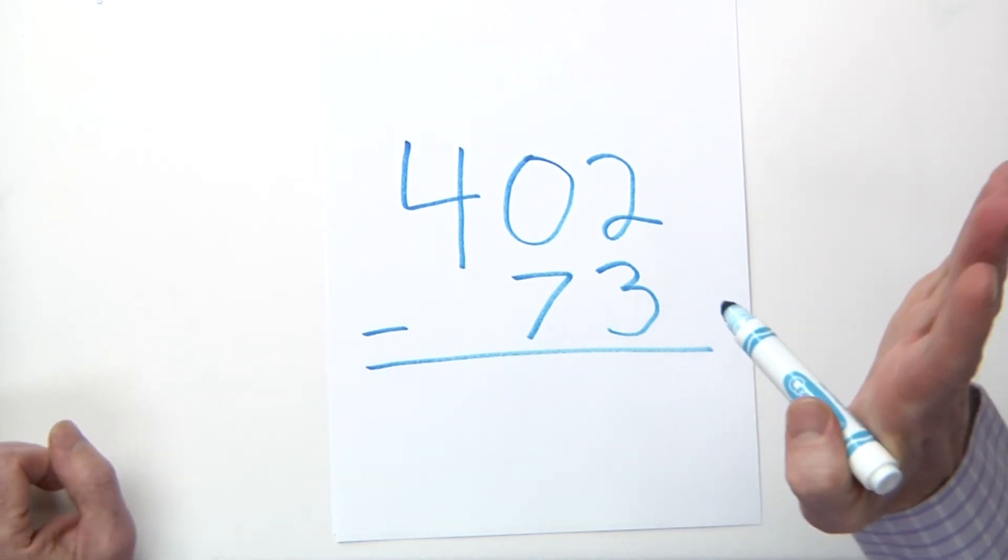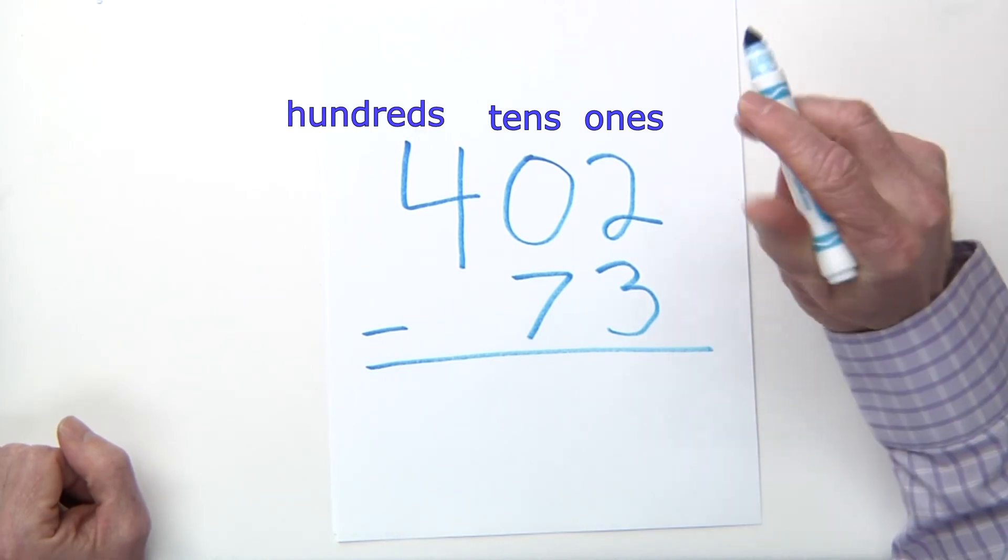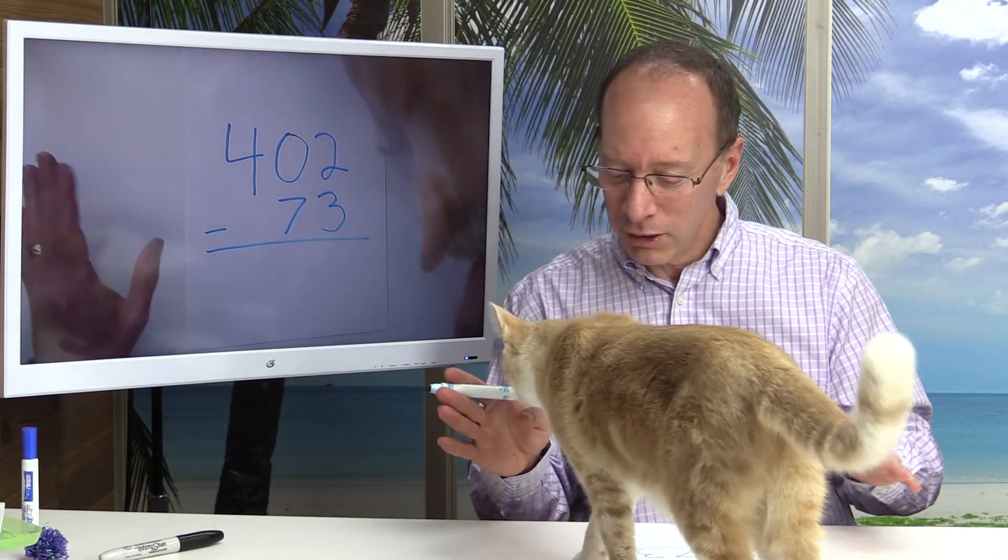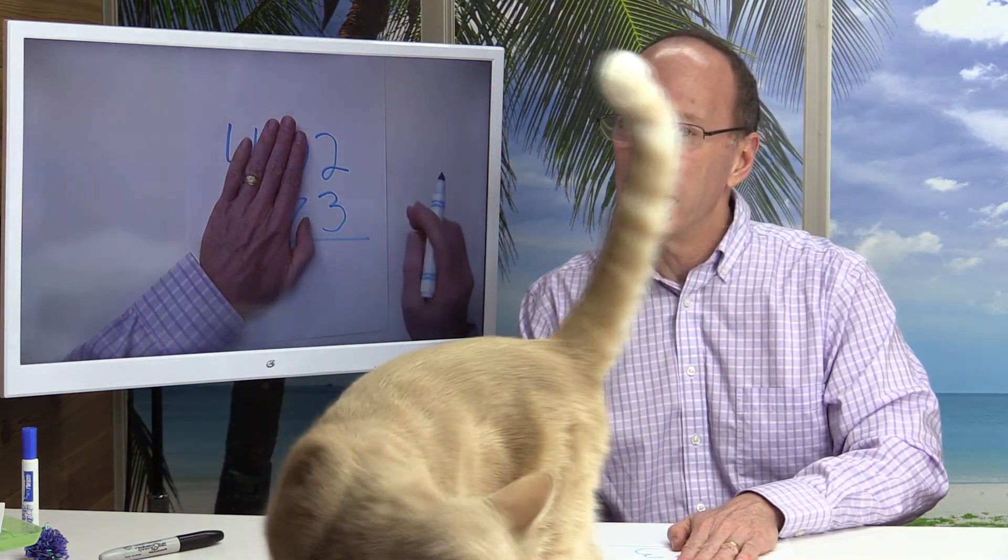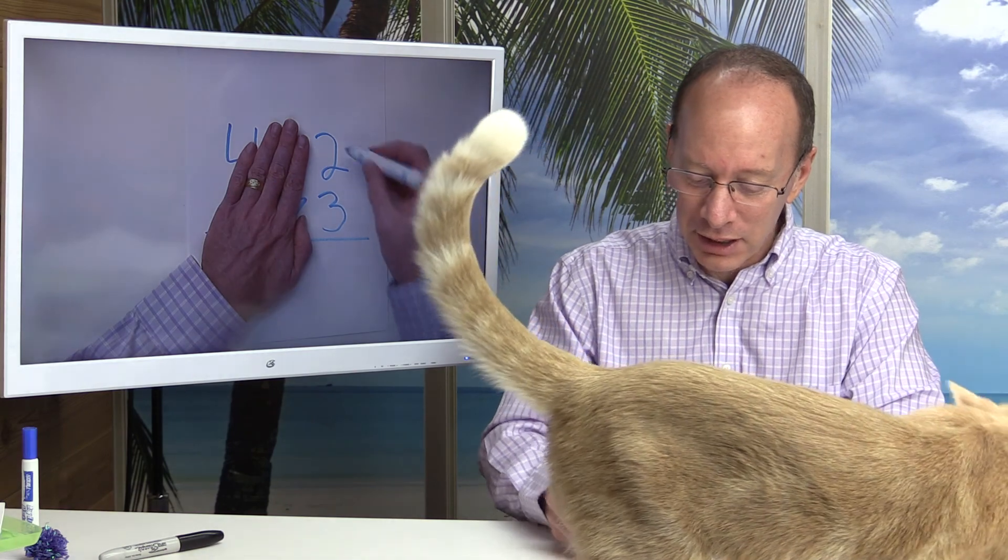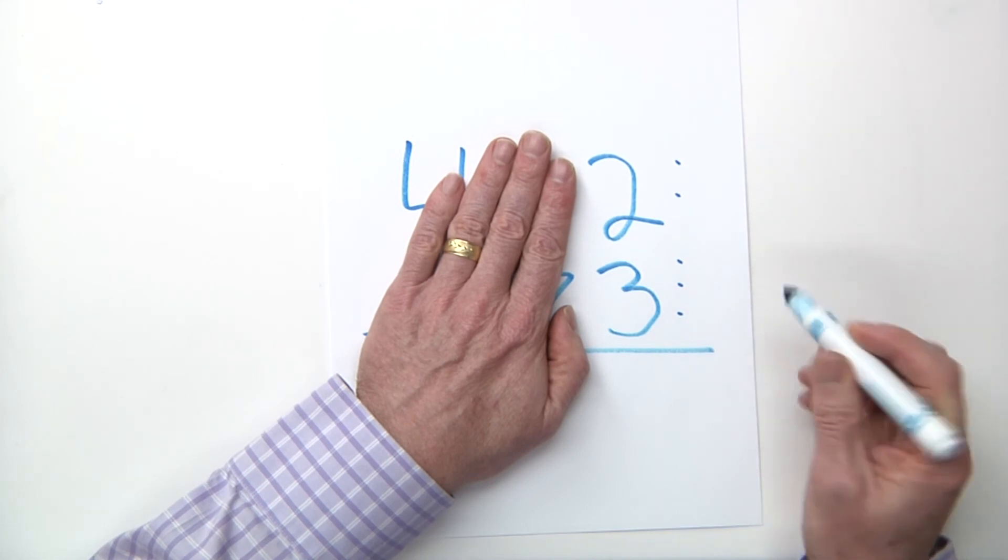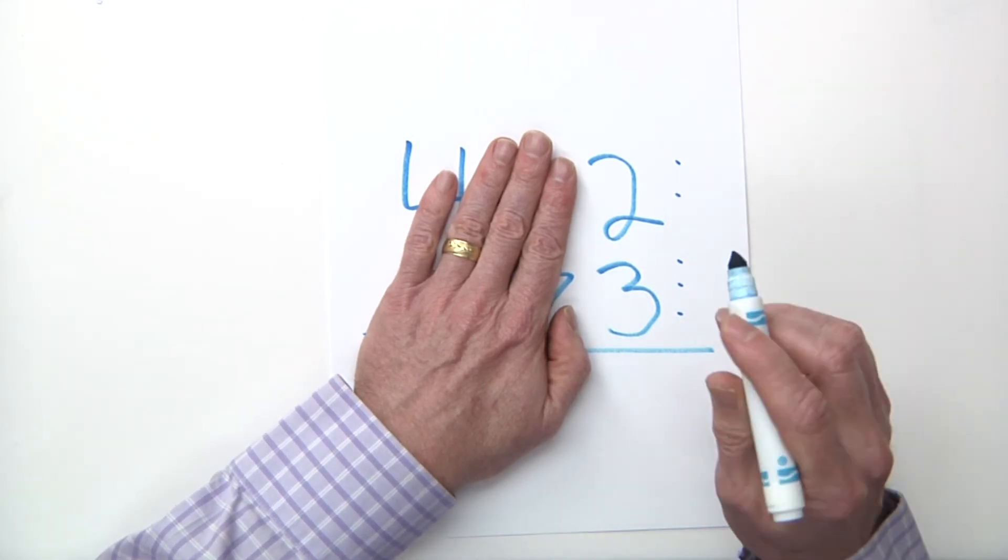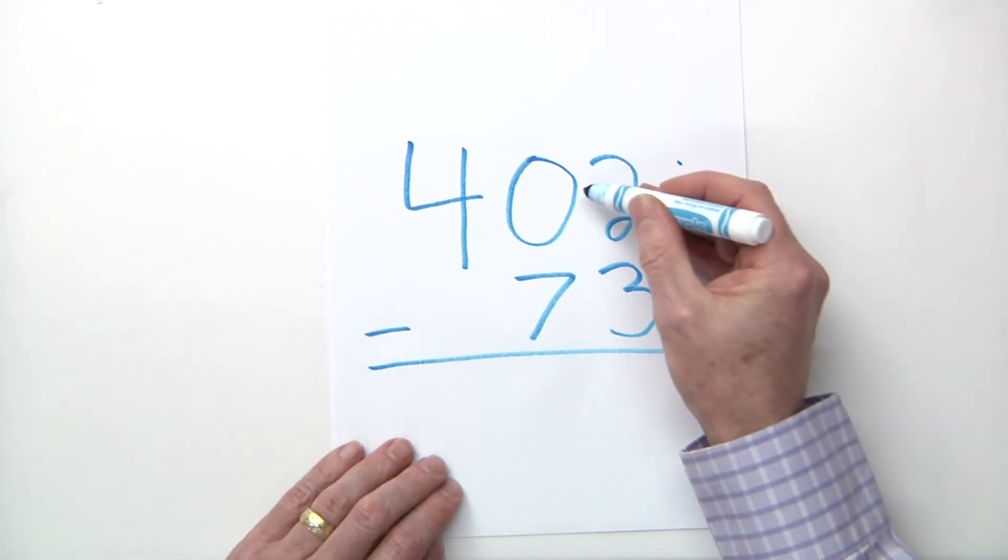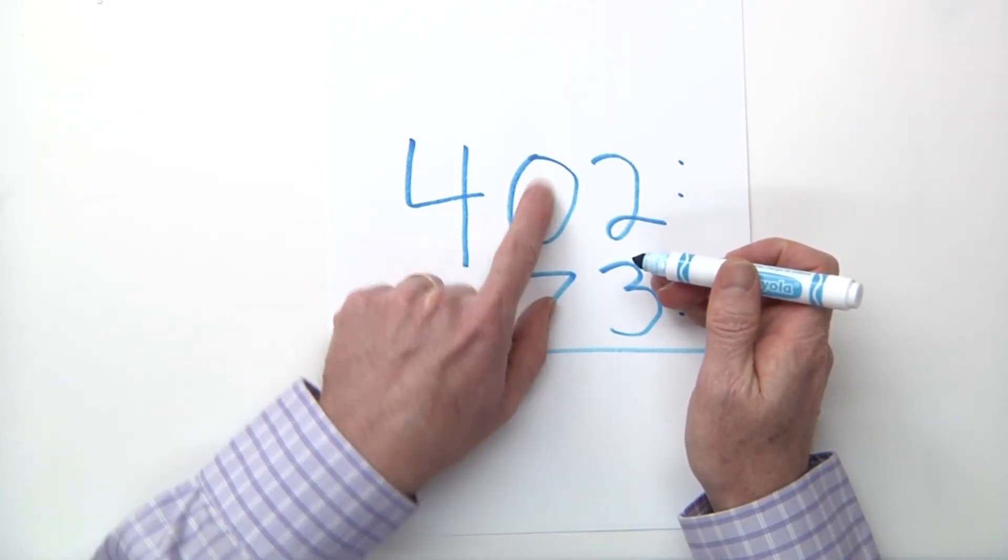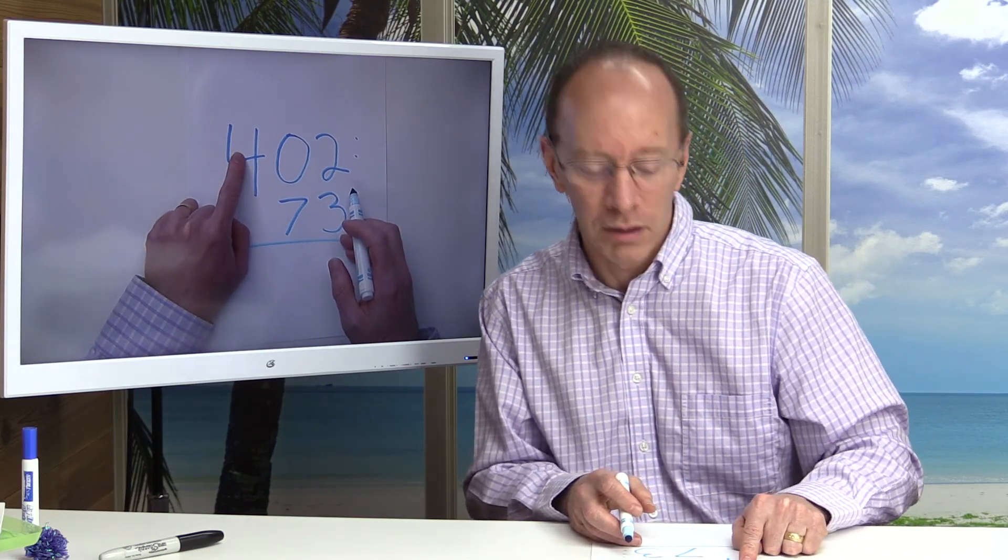Our first step is we subtract the ones first, then we subtract the tens, and then you subtract the hundreds, and then regroup if needed. I take a look here to see if I need to regroup. My top number is two, and my bottom number is three. If my top number is smaller, that means I need to regroup. So I look over next door, and there's nothing here. There's no number right here. So that means I need to go over to the hundreds place to borrow.